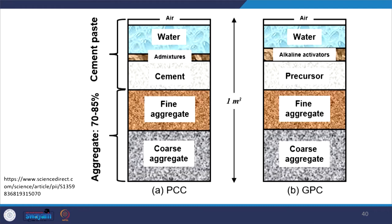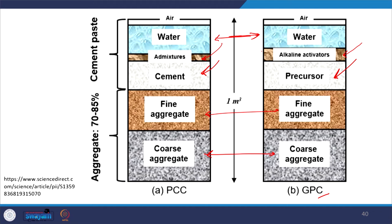This picture shows a typical difference between normal concrete and geopolymeric concrete. Both have coarse aggregate and fine aggregate. In normal concrete, cement is the binding agent. In geopolymeric concrete, the binding agent is a precursor — alumino-silicate materials — activated using alkaline activators. Admixtures and water are present in both. The main difference: normal concrete uses cement as binding agent, whereas geopolymeric concrete uses a combination of precursor and alkaline activators.